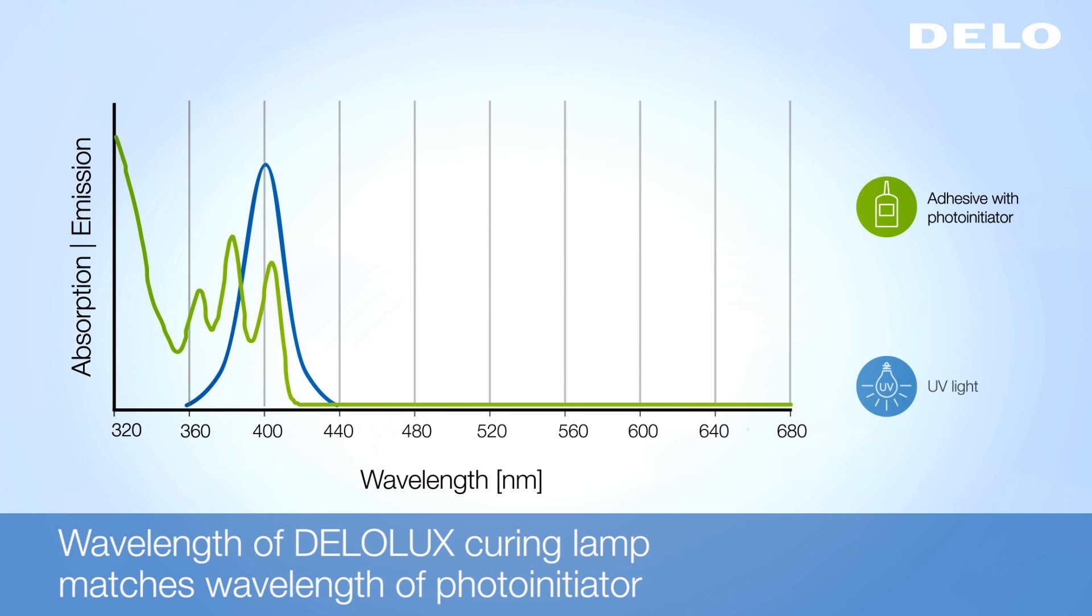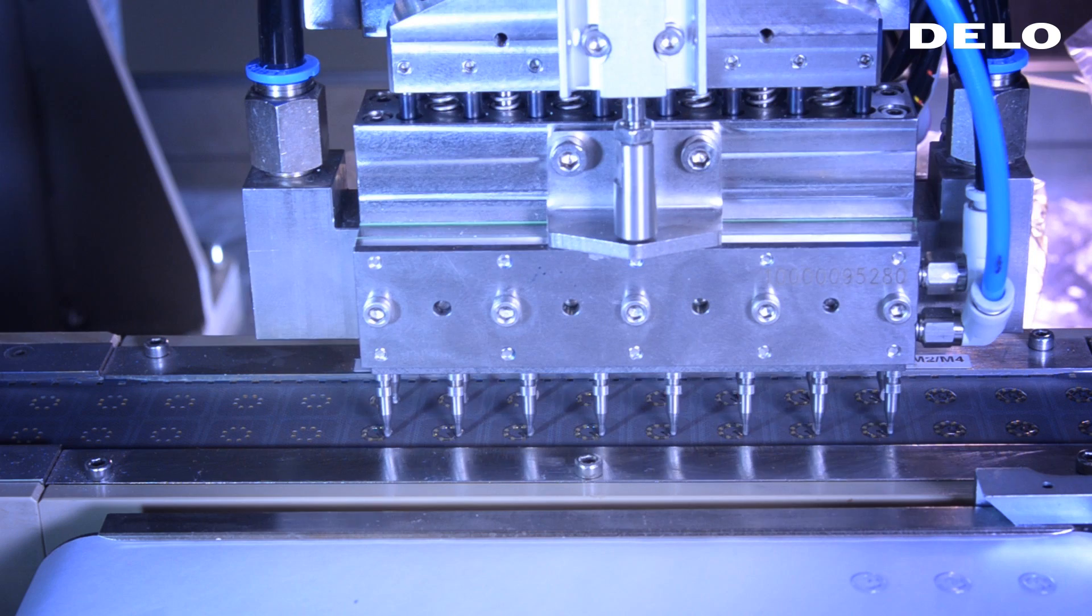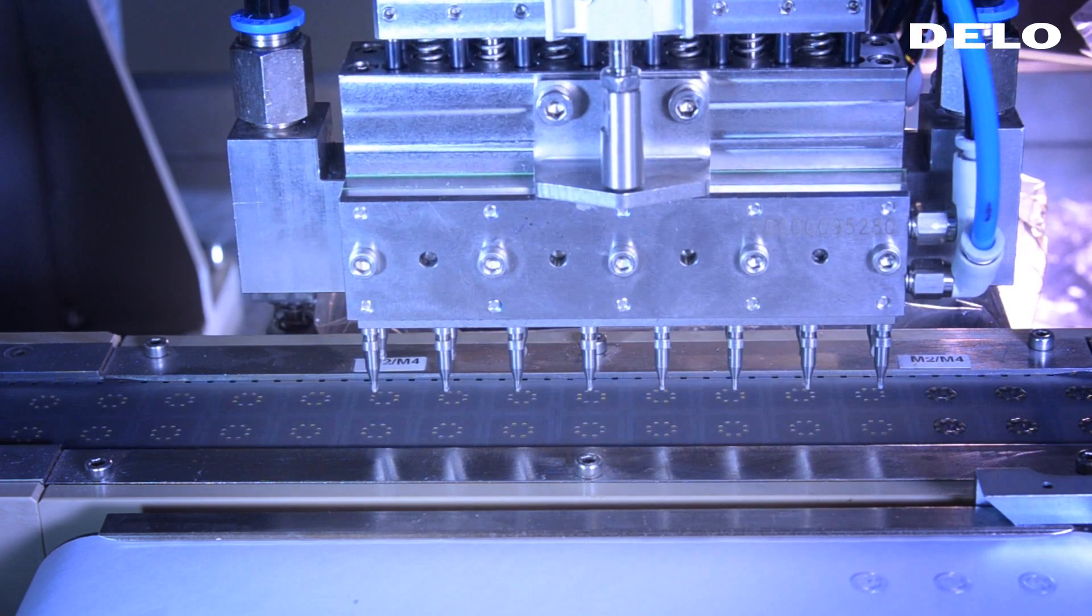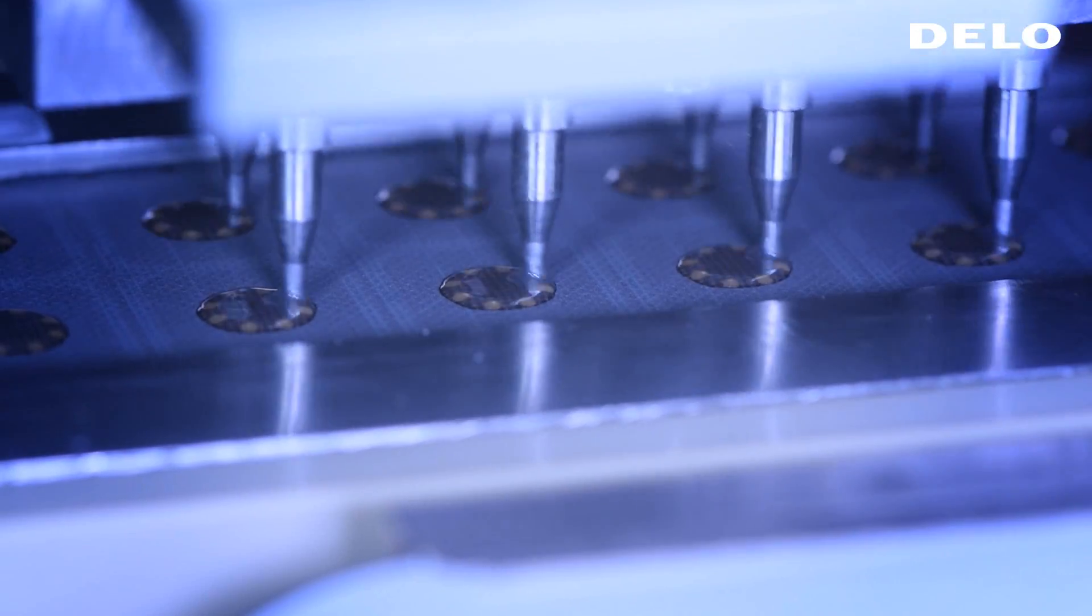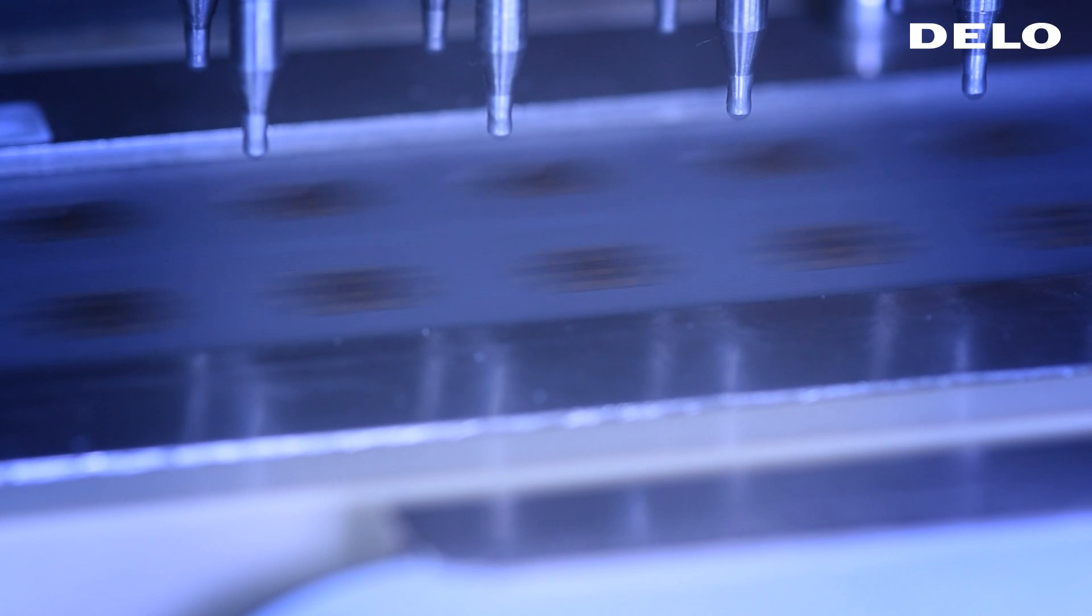For the shown example, an LED lamp of 400 nm would be suitable. To increase the quality of the whole UV curing process, it is very important to protect the process line from other light sources than the DELO lamps.